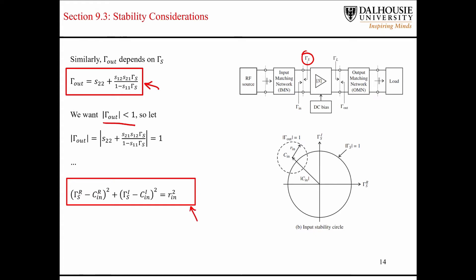You can set the output reflection coefficient magnitude equal to one, run through all the algebra, and then you end up with another set of circles that depend on all of the S-parameters. C_in and C_out are basically functions of the S-parameters, and the same is true for the radius.